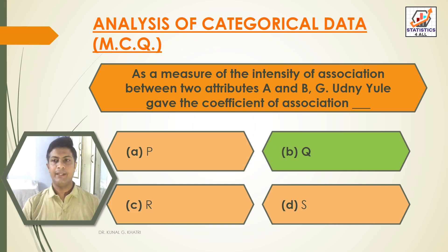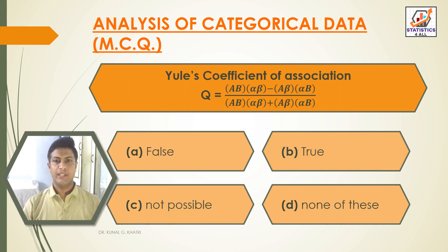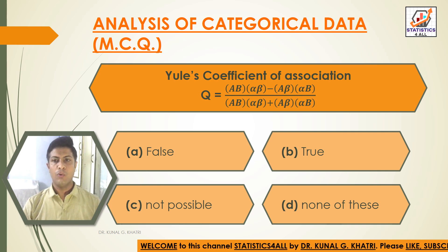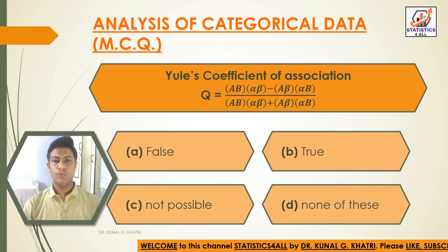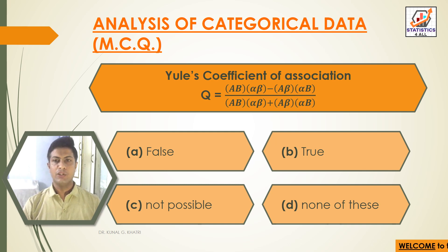As a measure of the intensity of association between two attributes A and B, G. Udny Yule gave the coefficient of association Q. Next question: Yule's coefficient of association Q is equal to (AB × αβ − Aβ × αB) / (AB × αβ + Aβ × αB). Options are: false, option B: true, option C: not possible, option D: none of these. The answer is option B, that is true.